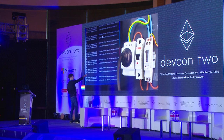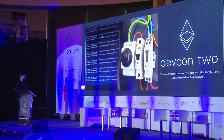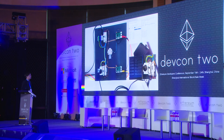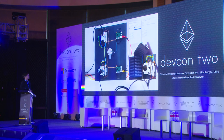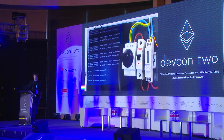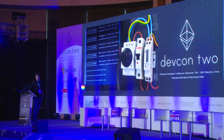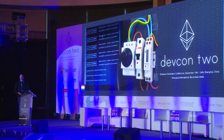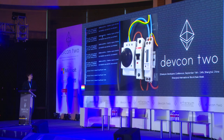Whenever the meter blinks there's a transaction going on, so for every impulse the meter gives we send a transaction. At some point in the demo the consumer ran out of tokens, and the credits he had with the producer also go to zero, so the producer decides to shut down the electricity supply. You can imagine that if such technology is widely deployed in IoT, we'll see millions of transactions in short time frames — and that's something you can tackle with technology like Raiden, but not so well with blockchains using global consensus.